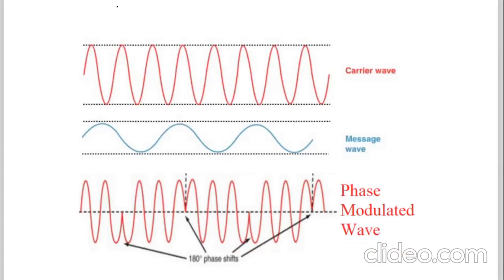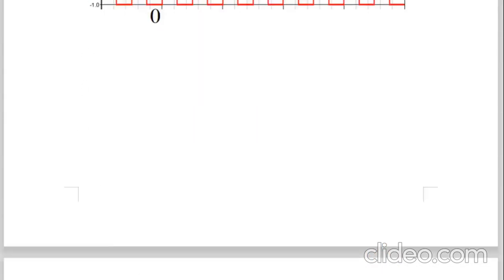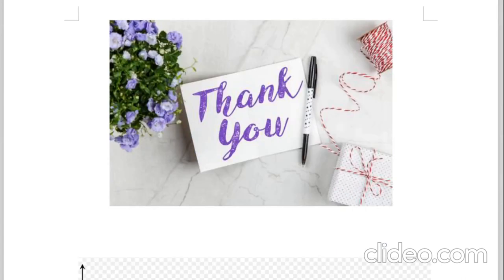The definition of phase modulation: in the process of phase modulation, the phase of the carrier signal is changed according to the instantaneous value of the information signal. When phase is changed, amplitude and frequency are constant. I hope you have understood the basic idea about modulation, definition of modulation, definition of amplitude modulation, definition of frequency modulation, and definition of phase modulation. All three — amplitude modulation, frequency modulation, and phase modulation — come under analog modulation, which is also called continuous wave modulation. In the next lecture I will go to digital modulation, which is also called pulse modulation. Thank you very much for watching the video.